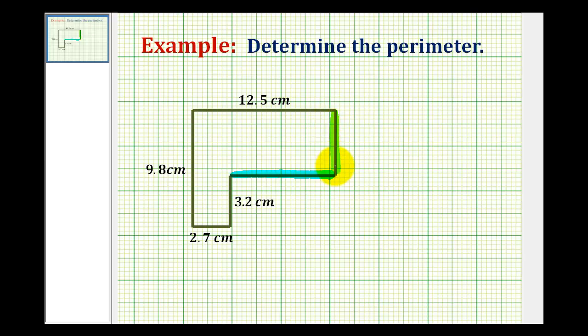Even though we're not given the length of this side here, we are given the length of the opposite side here. And it must be true that the length of this side here must be the same as the sum of this unknown length here and this length here. So to determine the length of this side here, we can take this entire length here, subtract 3.2, and that'll give us the length of this side here.